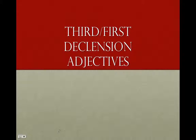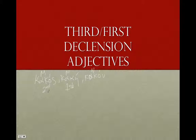You've already learned to decline first and second declension adjectives, so adjectives like kakos, kake, kakon — meaning evil, bad, wicked. We call these first and second declension adjectives because the feminine declines like a first declension noun, and the masculine and neuter decline like second declension masculines like anthropos and second declension neuters like doron.